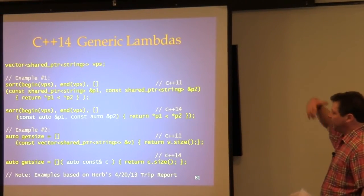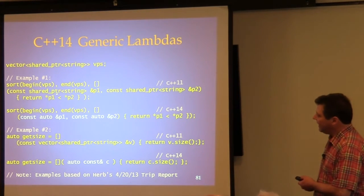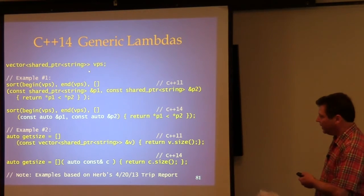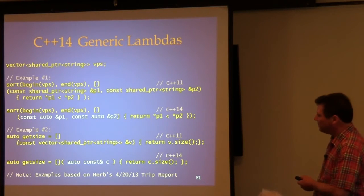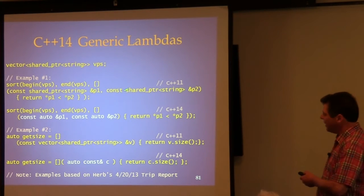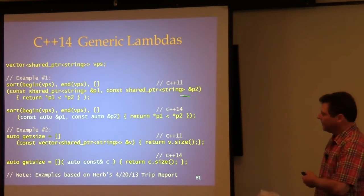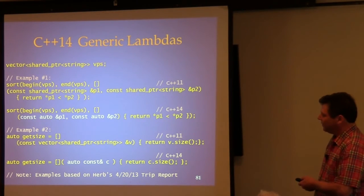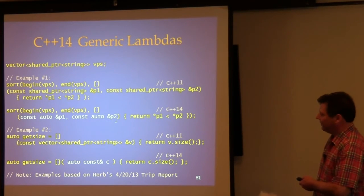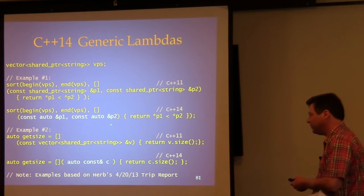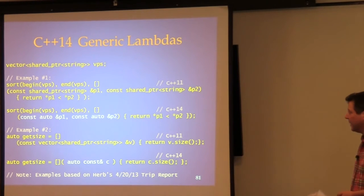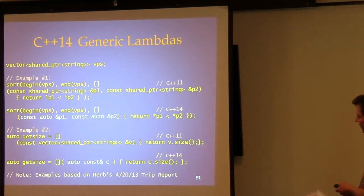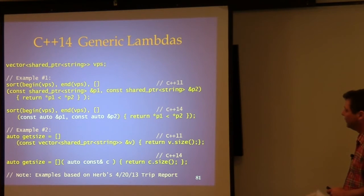C++14 adds generic lambdas, which simplify code considerably. In C++11, sorting a vector of shared_ptr<string> requires spelling out the full type of each lambda parameter: 'const shared_ptr<string>&'. In C++14, you can declare lambda parameters as 'const auto&', and the compiler figures out the type. This works by creating a class with a templated function call operator. It significantly simplifies verbose lambda parameter declarations.